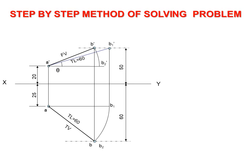Draw the vertical line from b' downwards which meets the locus of b at b2. Join ab2 and measure this length and verify with the given true length that is 60mm.